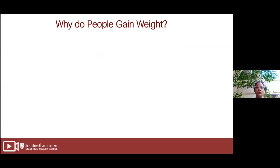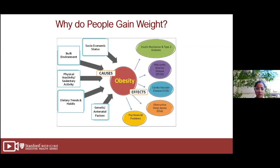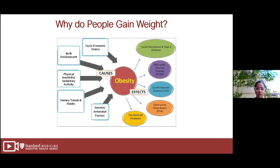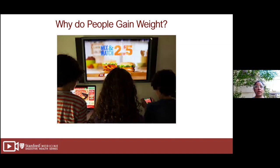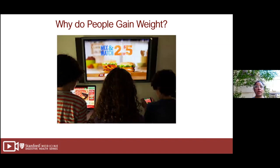I want to start with an overview of why people gain weight. My colleagues have talked about medical conditions, genetic factors, dietary trends and habits, and physical activity. I also want to highlight social constructs such as socioeconomic status and the environment. These factors lead to obesity and many different medical problems, as well as a lot of psychosocial problems. There are many reasons why losing weight or making healthy choices is difficult, because it's all around us in subliminal ways — we're constantly bombarded with images of food on TV and other devices.